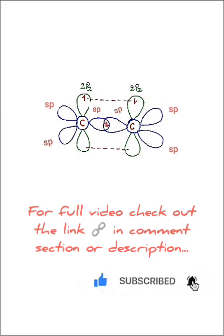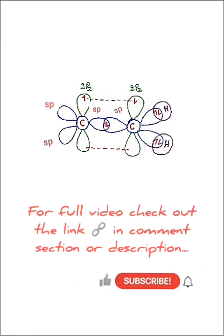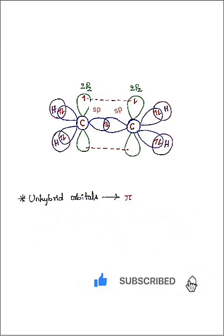And then hydrogen will share one electron with this sp2 orbital and with this sp2 orbital. And also hydrogen will share its electron with this sp2 orbital and with this sp2 orbital. Unhybridized orbitals always form pi bonds, while hybrid orbitals always form sigma bonds.